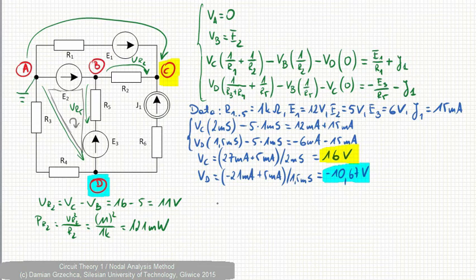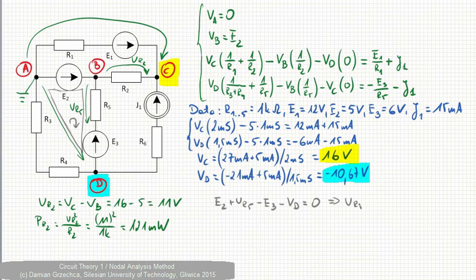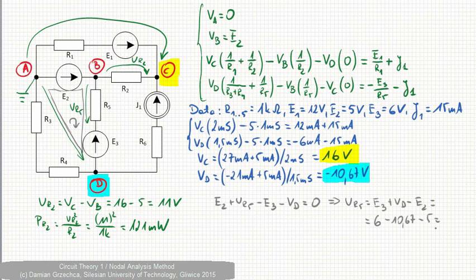First is the voltage source of E2 with a plus sign because of clockwise direction. Plus UR5 minus E3 minus Vd is zero. UR5 gives minus 9.67 V. That's voltage drop on resistor R5.